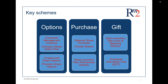Once you've identified answers to the whys and hows, you're in a much better position to look at the whats — the key schemes available to private companies. In some cases, just one will do. In other situations, depending on your objectives, you might need more than one arrangement. I've divided the schemes into three sub-sectors: plans where you grant options over shares, plans where you let employees buy shares, and plans where you gift shares to employees without them paying anything.